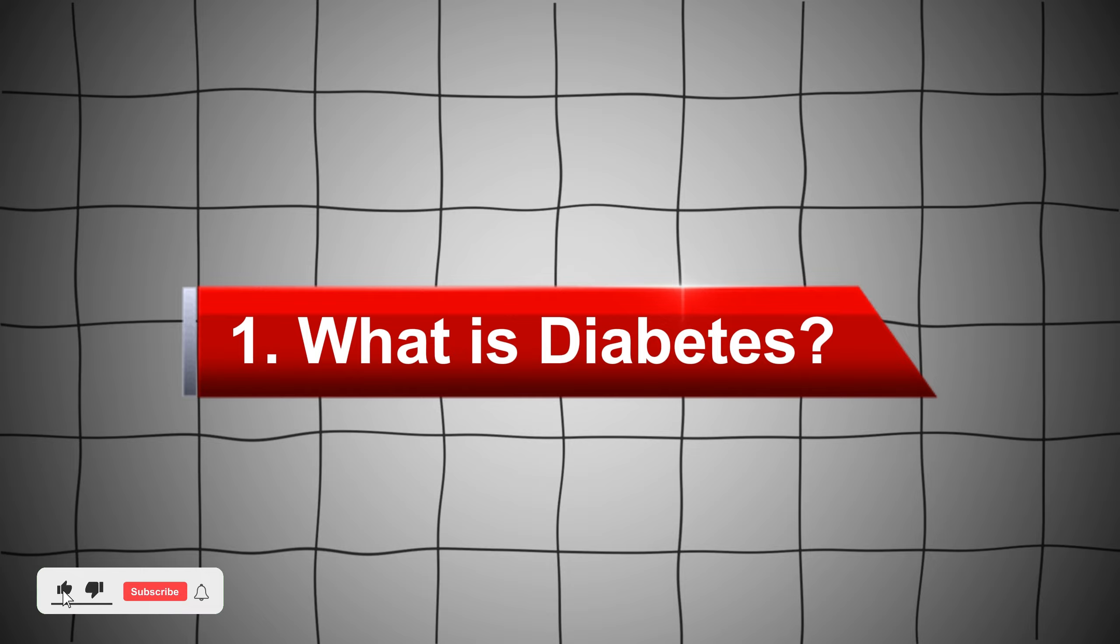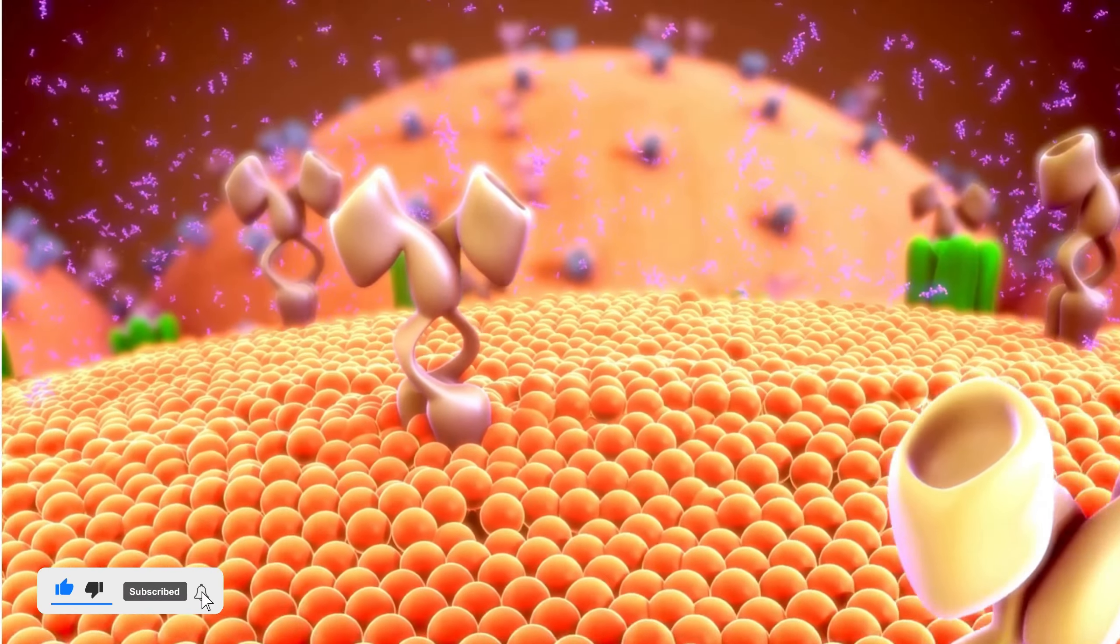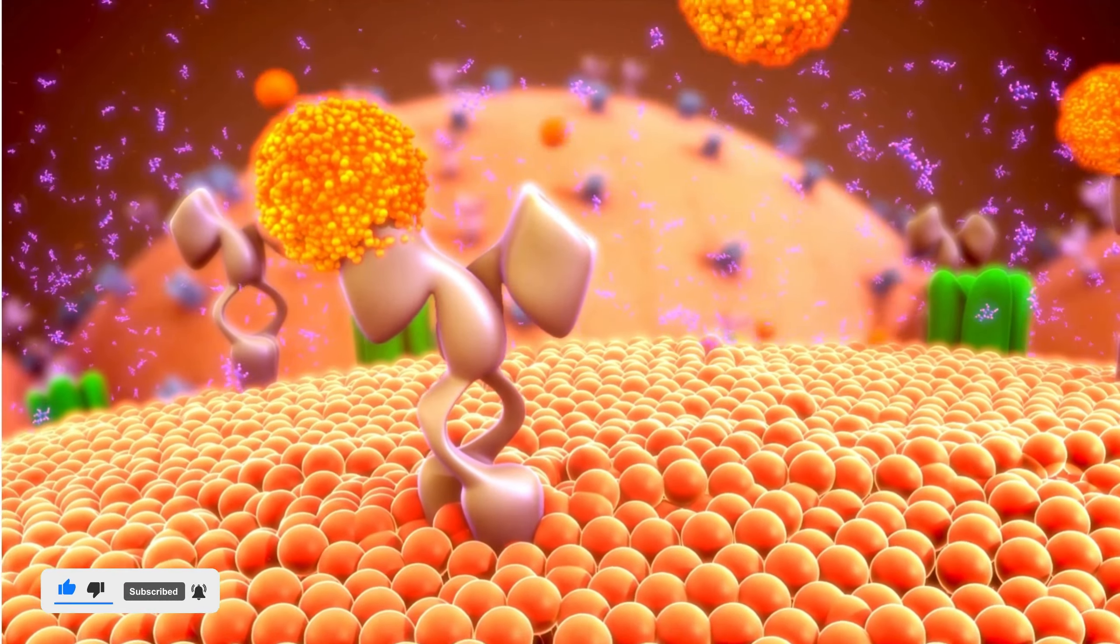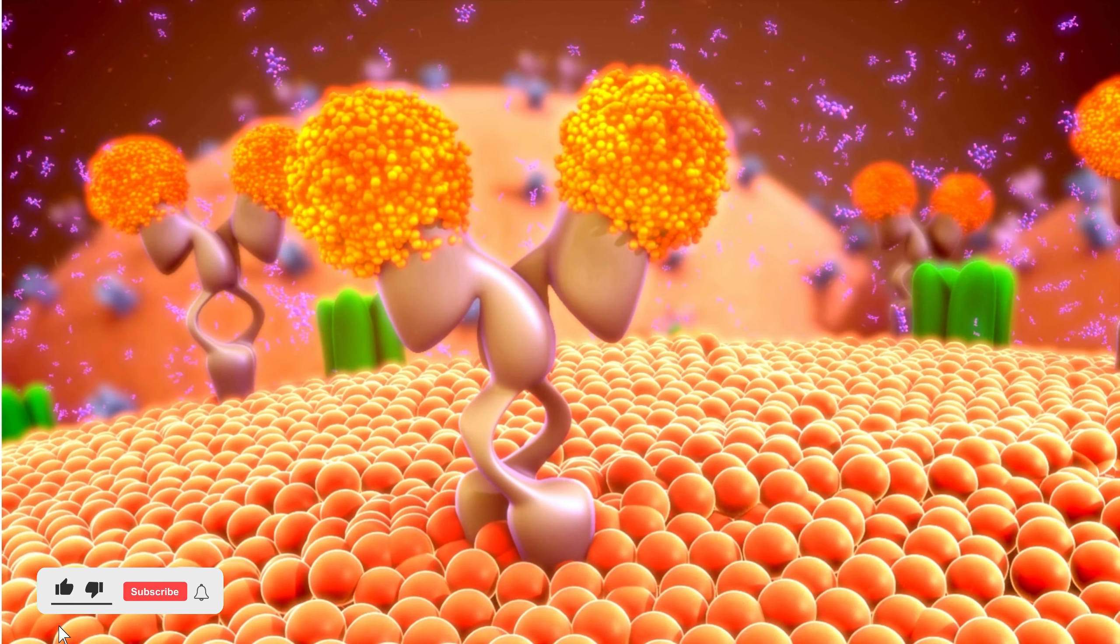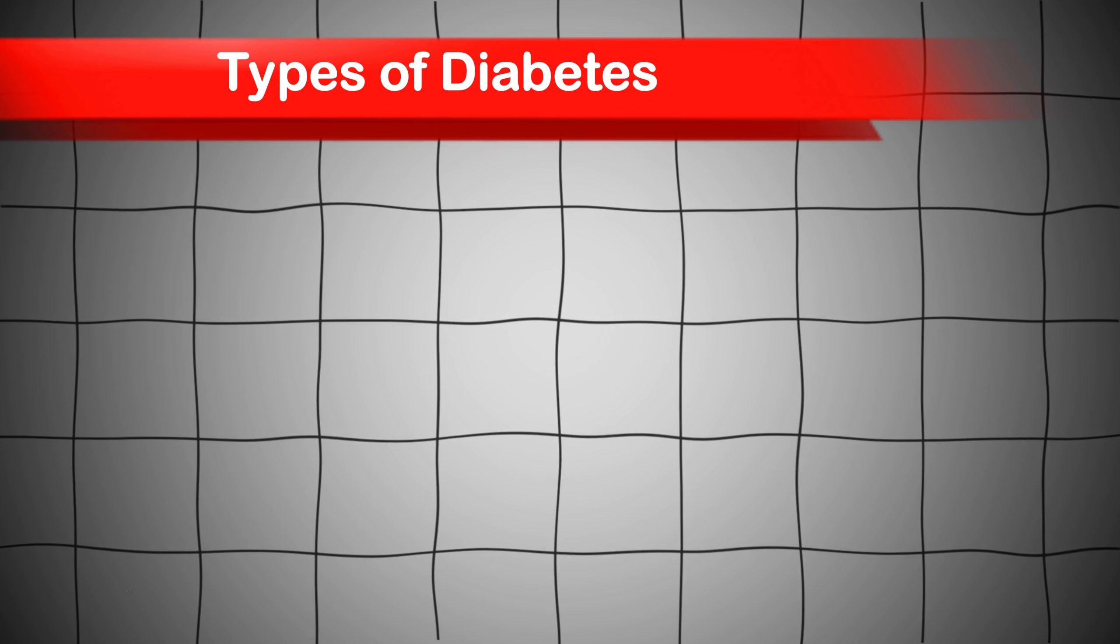What is diabetes? Diabetes is a chronic condition in which your body either can't produce enough insulin or can't effectively use the insulin it makes. Insulin is a hormone that helps control blood sugar levels. There are three main types of diabetes.